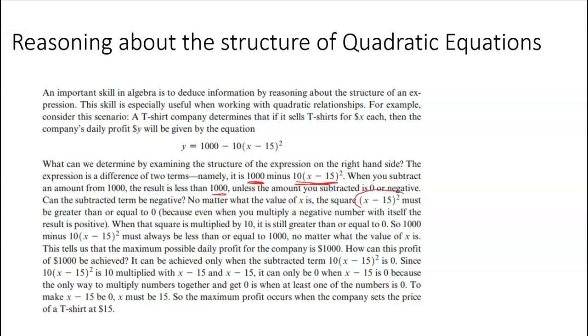But can the number be negative or zero? Because we're looking at a squared value, it's going to be positive or zero. So no matter what happens, the 1,000 is always going to be subtracting zero or a positive number. So what that means is that 1,000 minus that number must always be less than or equal to 1,000, no matter what. So that means that this is the maximum.